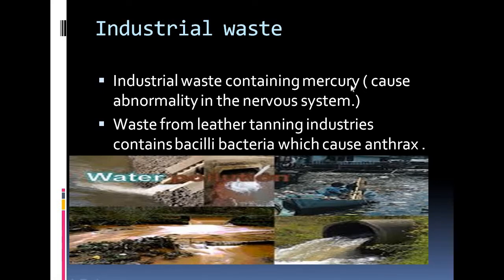Industrial waste also causes water contamination. For example, in Kyushu Bay, Japan — famous for its electronics industry — waste containing mercury was discharged into the bay. Fishers consumed water and fish contaminated with mercury. This led to biomagnification, meaning the concentration of mercury increased through the trophic levels of the food chain, ultimately reaching humans through the fish.